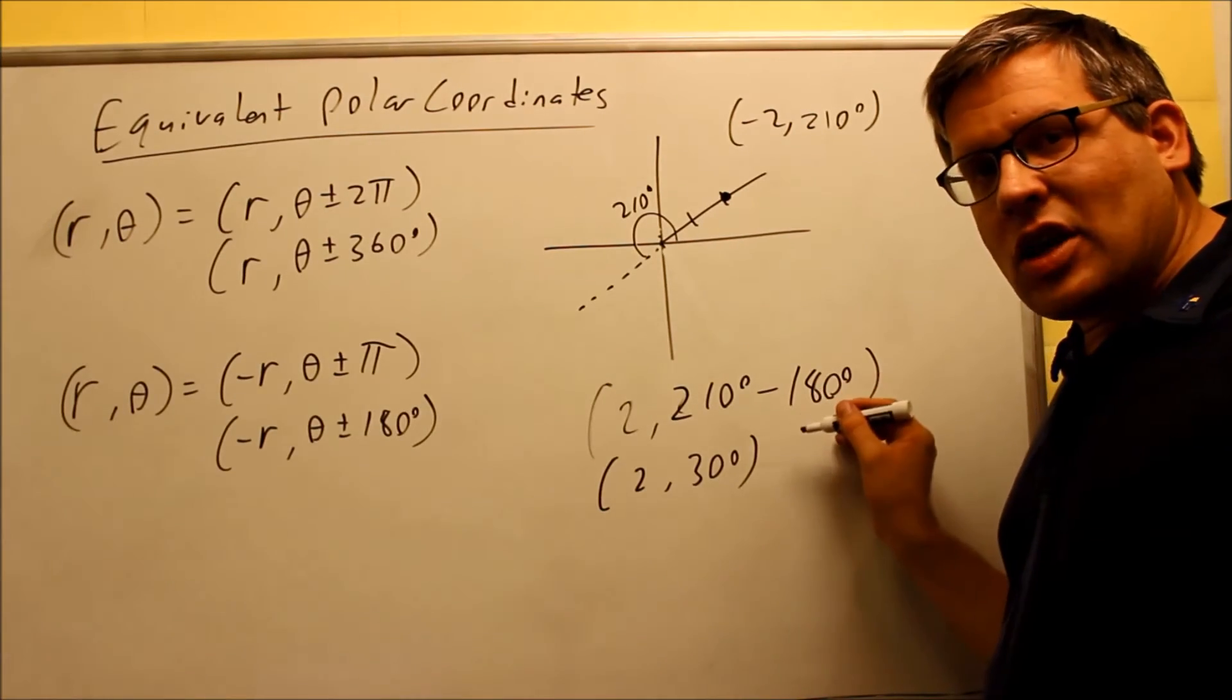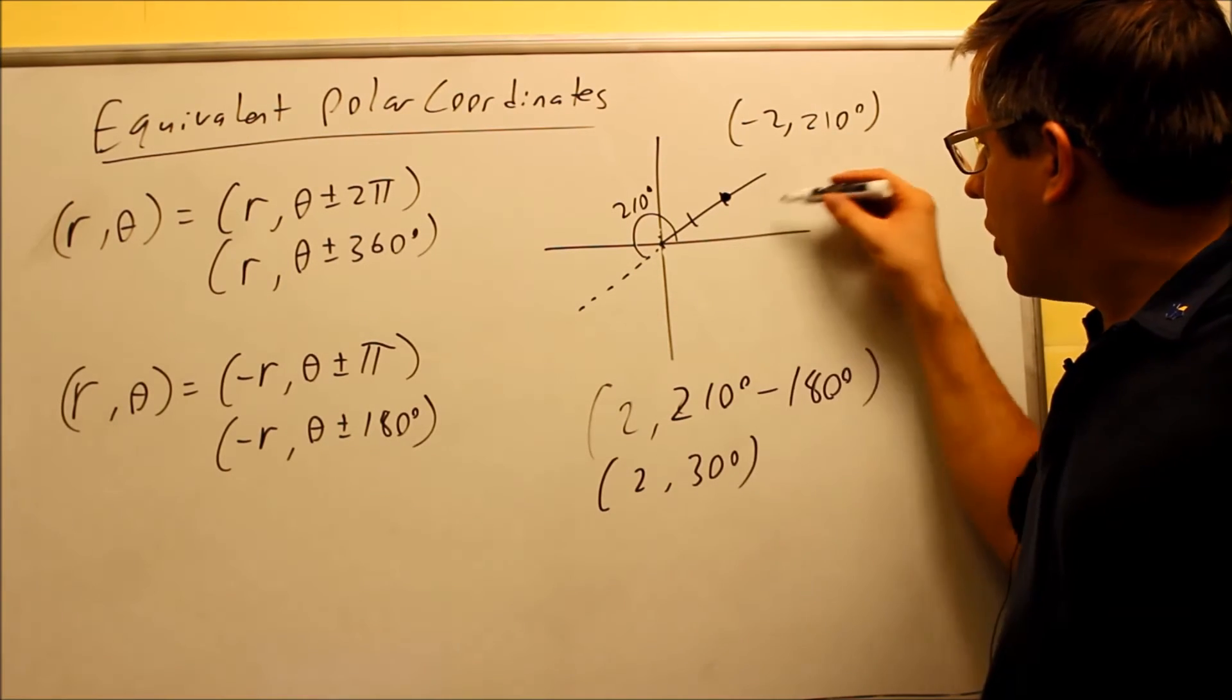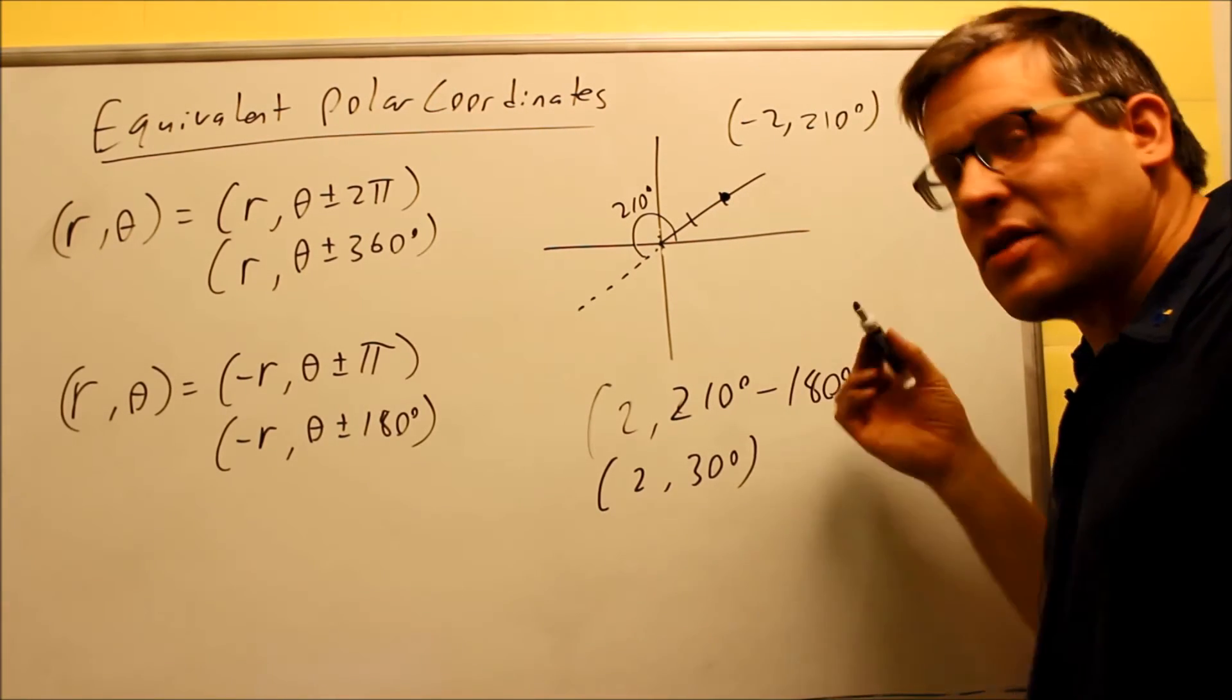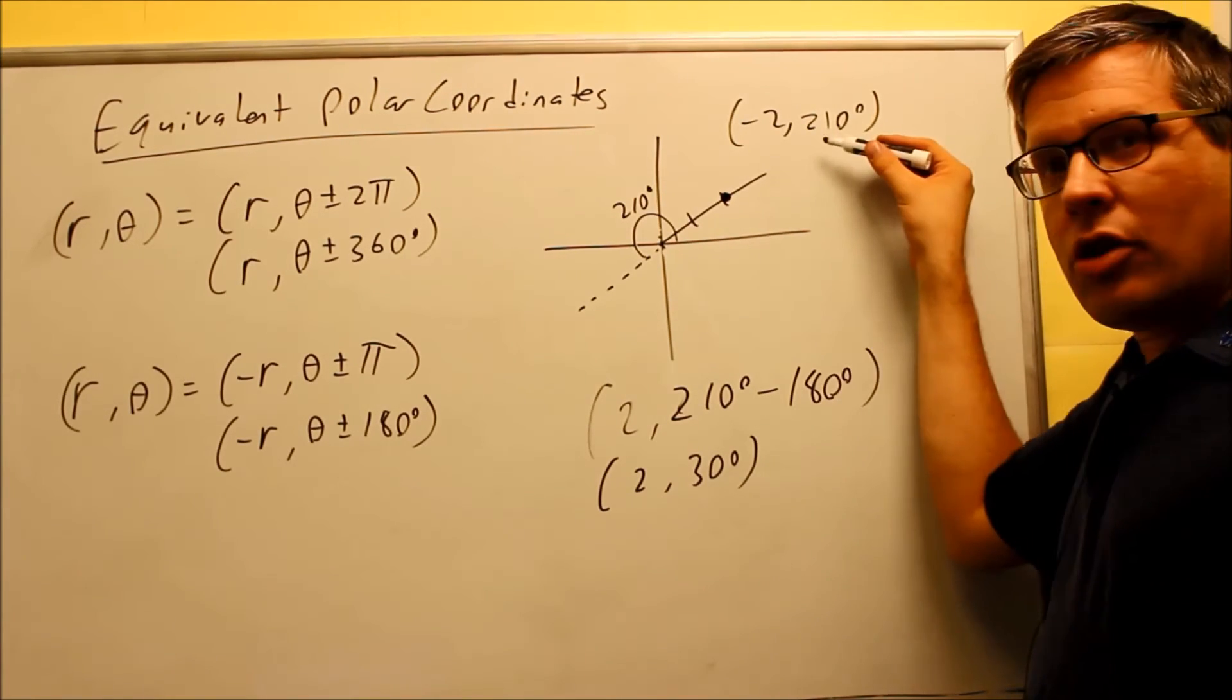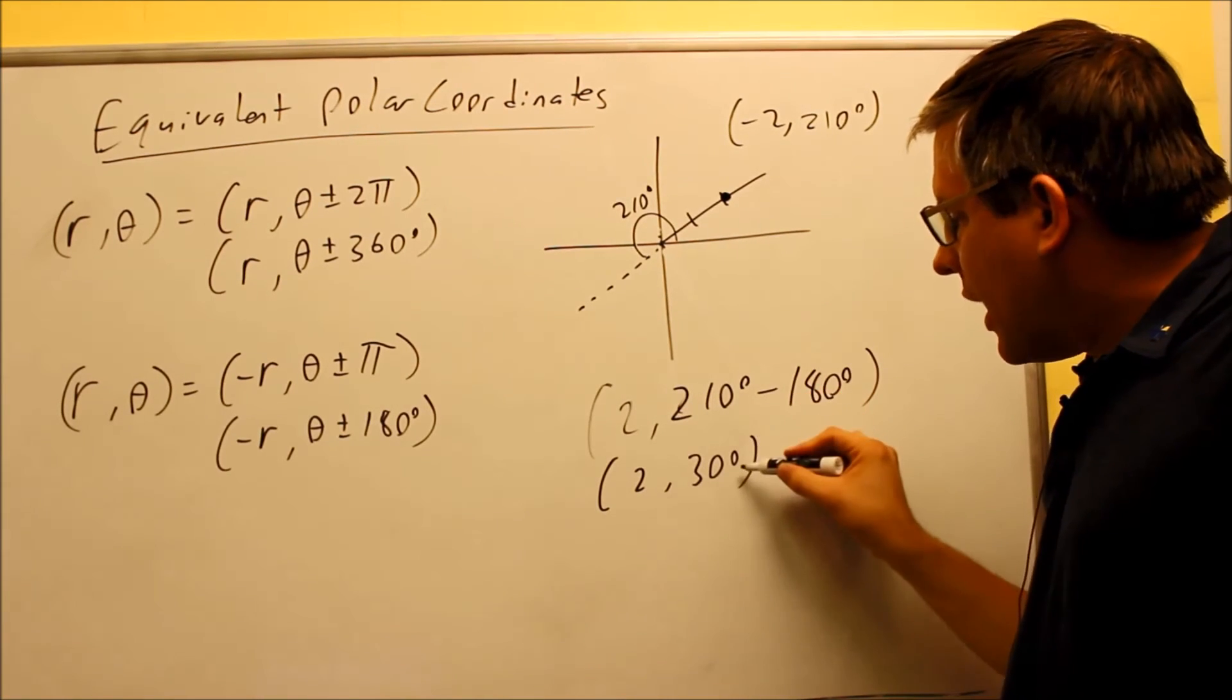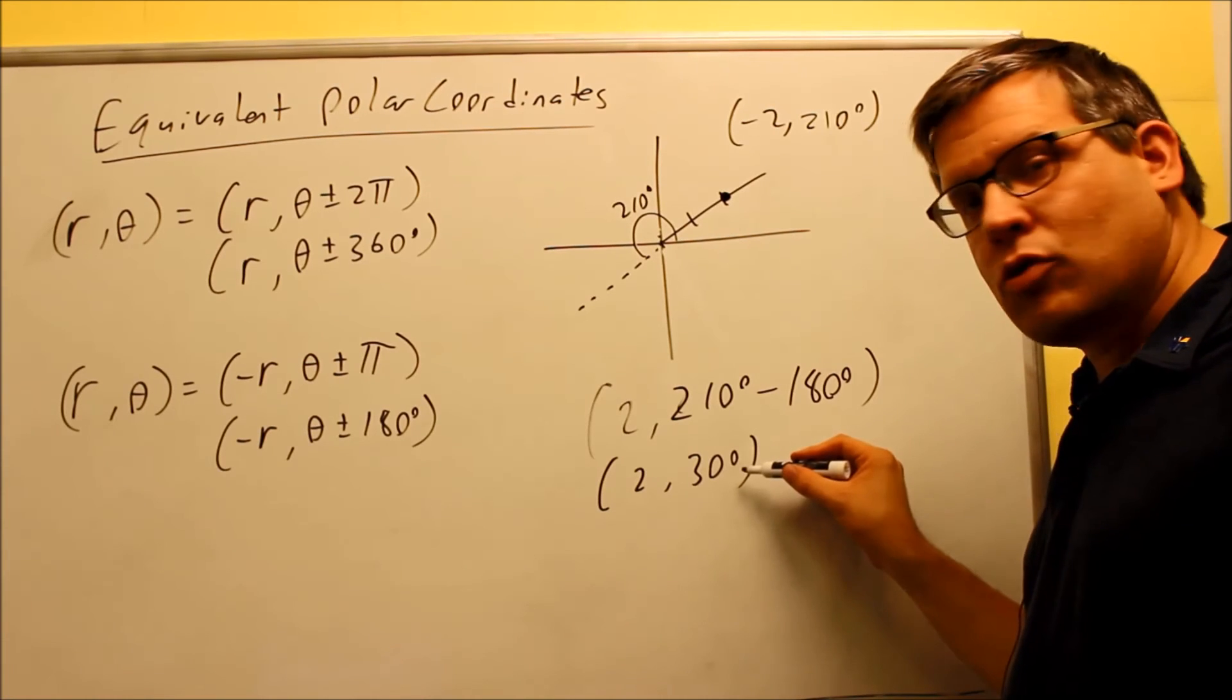So what I've just done is I've found an equivalent polar coordinate. It takes me to exactly the same spot, because notice, if I do this one, (2, 30°), that means I would just go 30 degrees, draw the solid line, count 2, that's it. I don't have to worry about using a negative r value. So I've found an equivalent polar coordinate that takes me to the same spot as this one, but I just rewrote it by using a positive r value, and now I have a θ here between 0 and 360, it takes me to the equivalent spot.